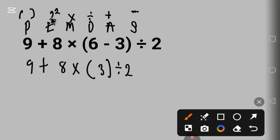Next is exponent, we don't have exponent here. We have multiplication and division that's next, and from the left multiplication is the first one, so we solve multiplication first. So we have 9 + 8 × 3 is 24